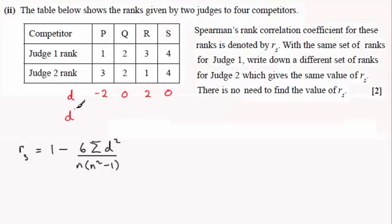If we do the squares of those, we're going to have 4, 0, 4, 0. We can see that the sum of the d squareds is going to be a total of 8.